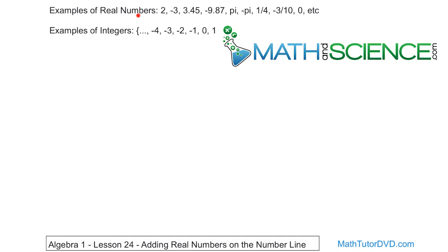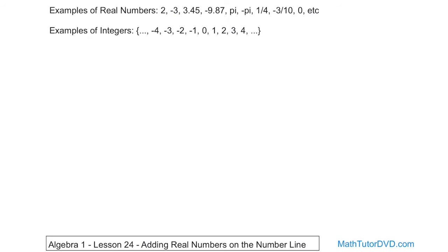Real numbers are positive and negative numbers, but they can be any kind of number you can dream of. They can be whole numbers like positive 2 or negative 3. They can be decimals, infinite repeating or non-repeating decimals like pi and negative pi. They can be fractions, negative fractions, 0, etc.